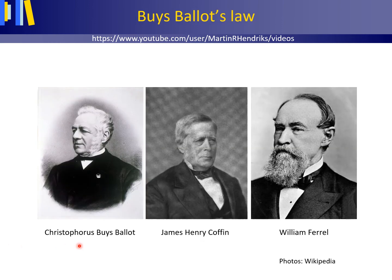Christophorus Buys-Ballot was professor of physics at Utrecht University and the founder of the Royal Dutch Meteorological Institute. Shortly after formulating his law in 1857, Buys-Ballot discovered that he had empirically verified a theoretical relation deduced one year earlier by American meteorologists James Henry Coffin and William Ferrell. Ferrell gracefully declined Buys-Ballot's later offer to have the law renamed.